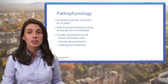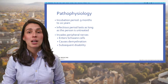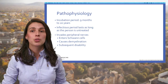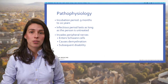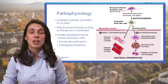The incubation period — the time between becoming infected and developing symptoms — ranges from nine months to 20 years. The infectious period, the time during which an infected person can infect others, will last for as long as the person has untreated disease. However, the person is no longer infectious soon after starting treatment with a combination of two or three medicines called multi-drug therapy. We will talk about this later.